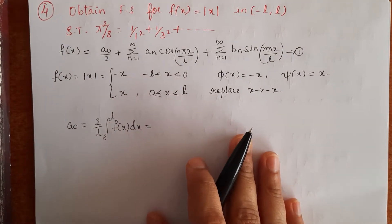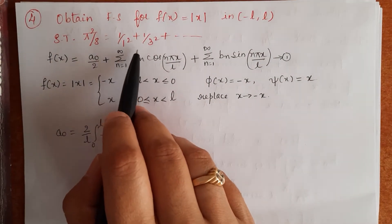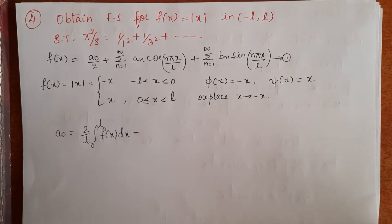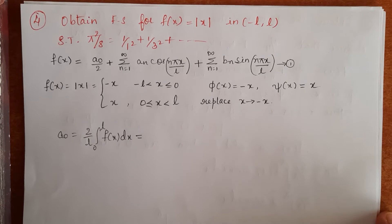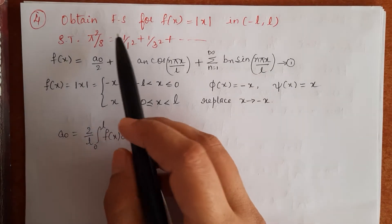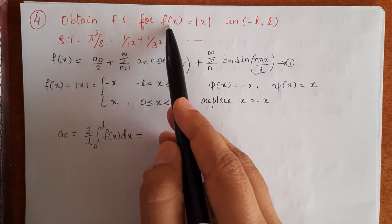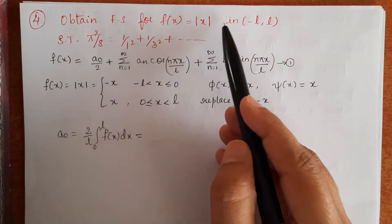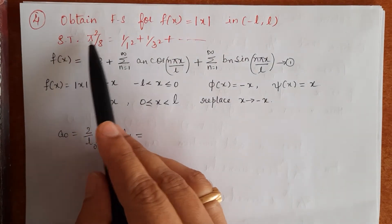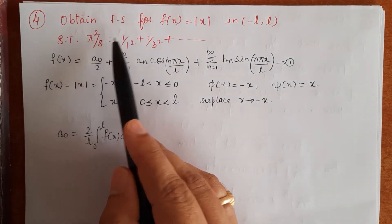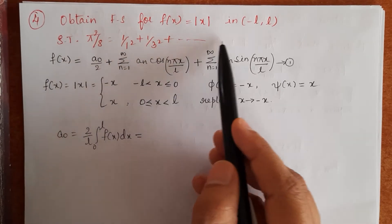Let us continue with the problems. In the previous video, we have seen problems on the interval minus pi to pi and 0 to 2 pi. Now let us see the next problem: obtain the Fourier series for the function f(x) equals mod x in the interval minus l to l, and show that pi squared by 8 equals 1 by 1 squared plus 1 by 3 squared plus 1 by 5 squared plus etcetera.